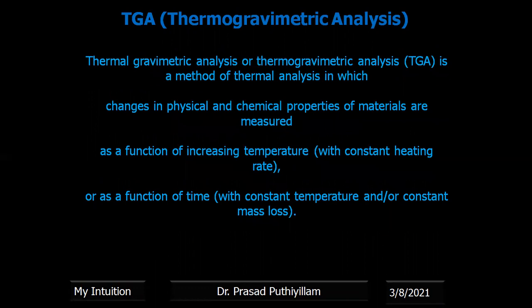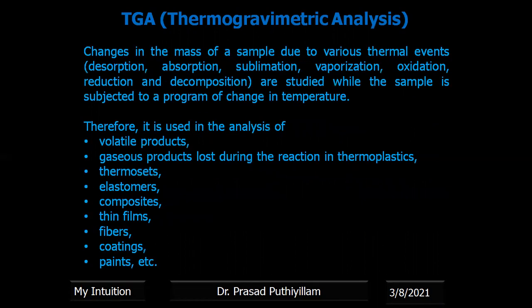TGA or thermo-gravimetric analysis is a method of thermal analysis in which changes in physical and chemical properties of materials are measured as a function of increasing temperature or as a function of time. The various mass changes that can occur by increasing the temperature of the sample may be due to desorption, absorption, sublimation, vaporization, oxidation, reduction and even decomposition.